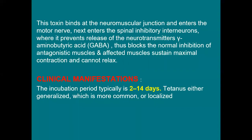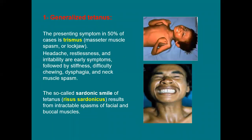After an incubation period of about 2 to 14 days, tetanus can be either generalized — which is more common — or localized. In generalized tetanus, the presenting symptom in 50% of cases is trismus: masseter muscle contraction or spasm, also called lockjaw. This is followed by headache, restlessness, irritability, stiffness, difficulty in chewing, dysphagia, and neck muscle spasm.